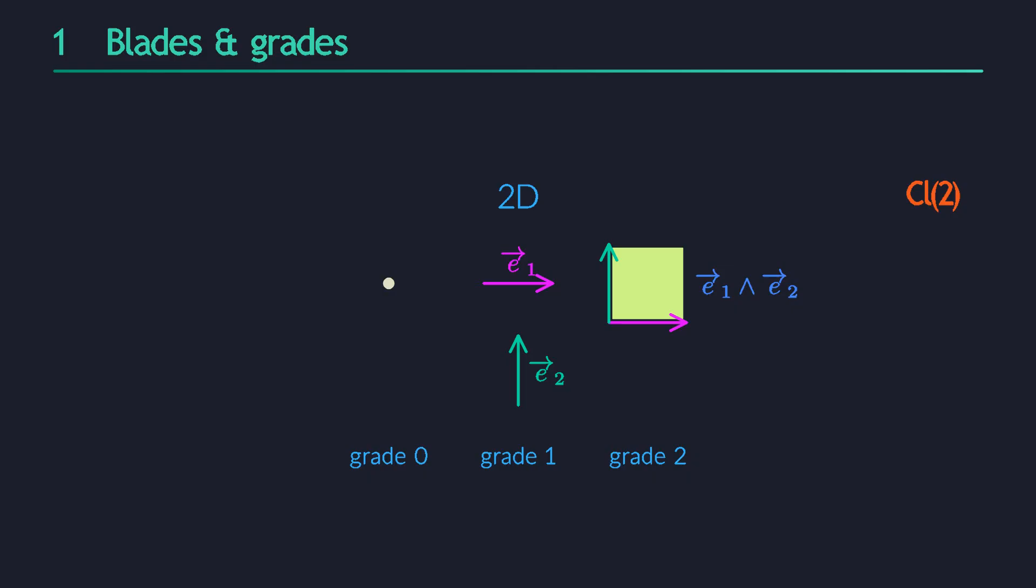I draw it as a little square here, but it doesn't really have a fixed shape. It is characterized by the plane it lives in, and by its size. The size of the basis bivector is the area of the square, which is 1.